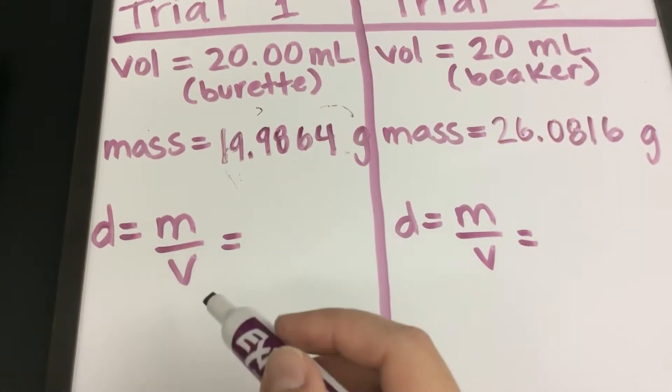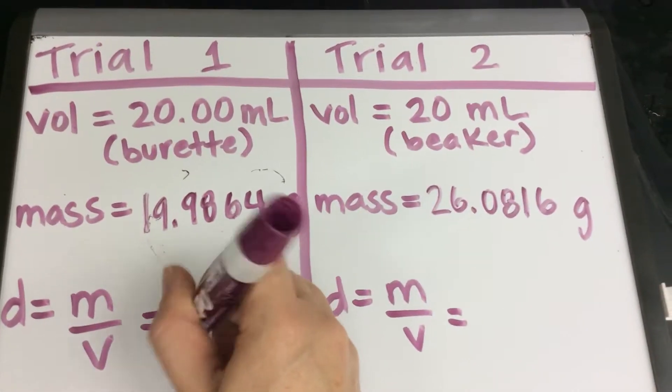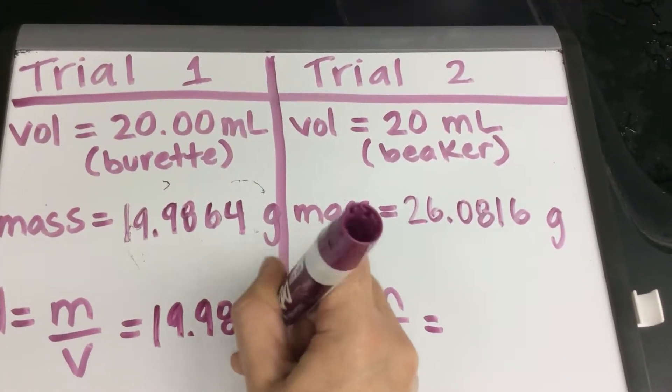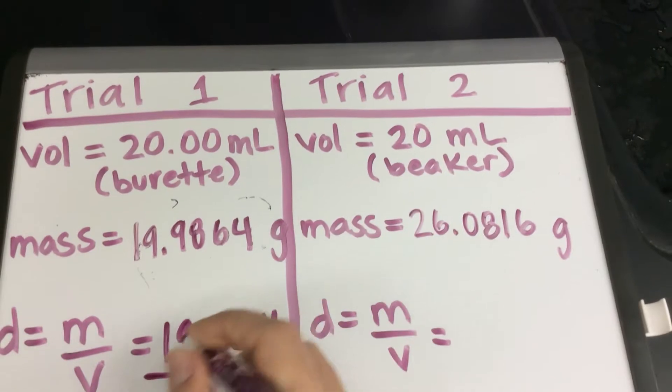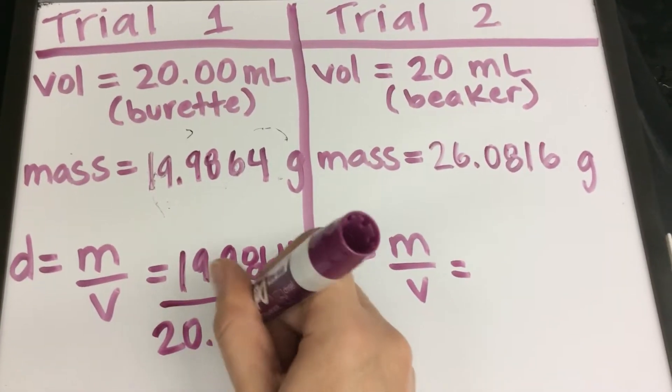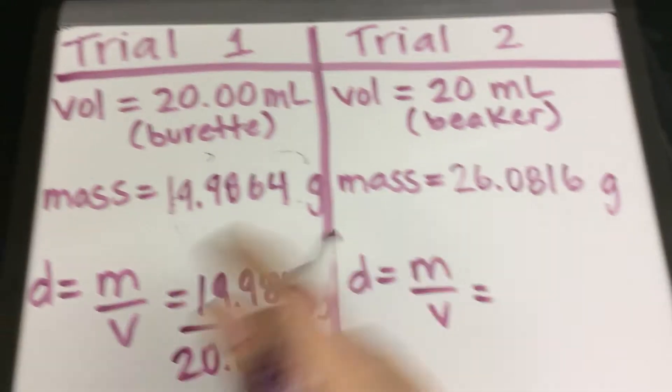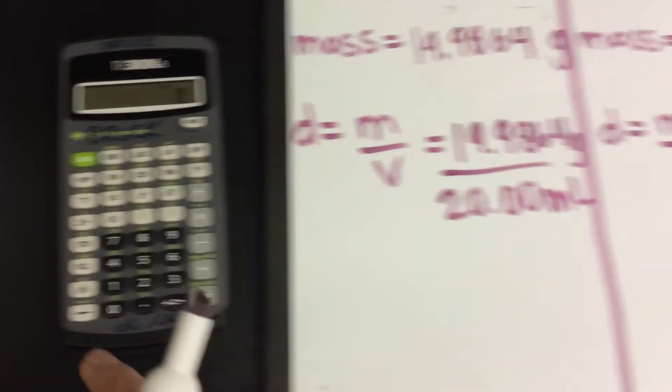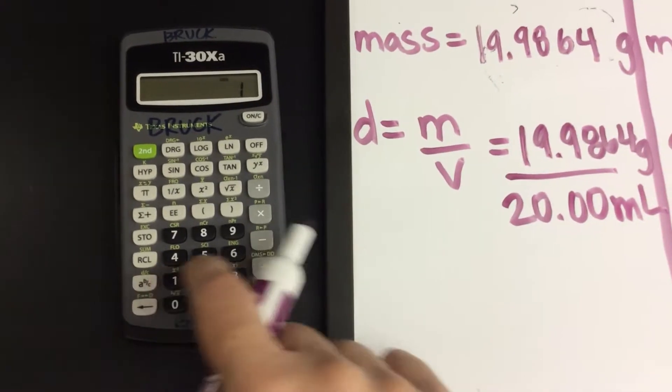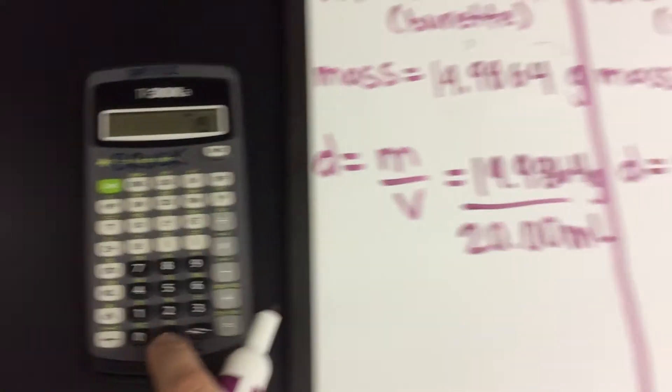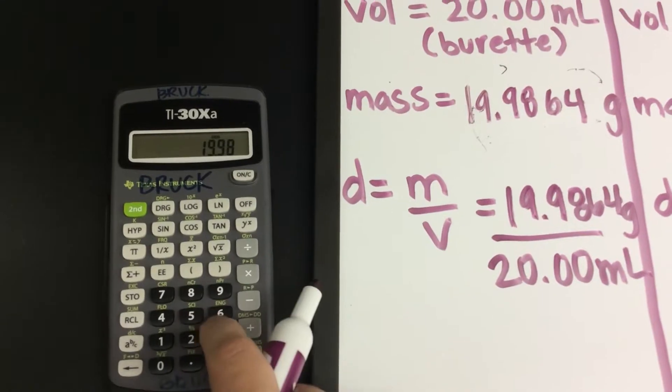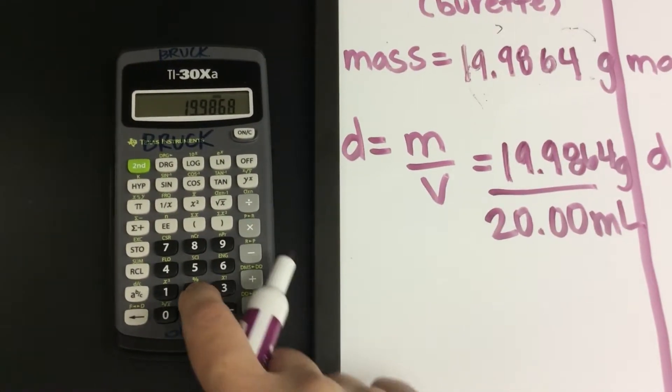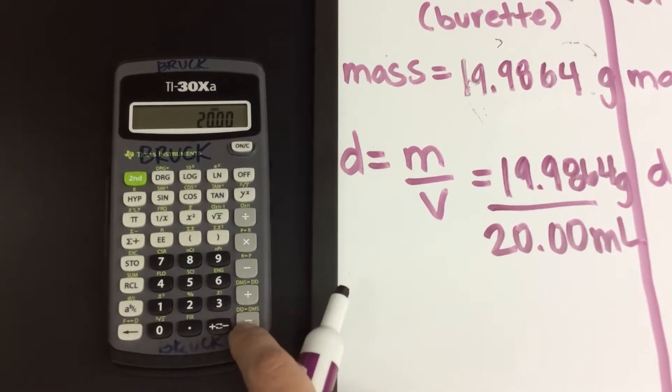So density is equal to mass over volume. So that would be 19.9864 grams over 20.00 milliliters. Now, when you do the arithmetic of sig figs, the calculation on your calculator is the exact same, right? You just round your final answer. So 19.9864 divided by 20.00.